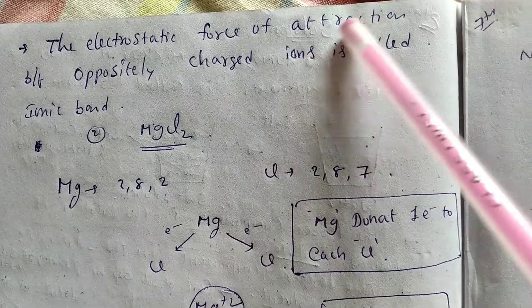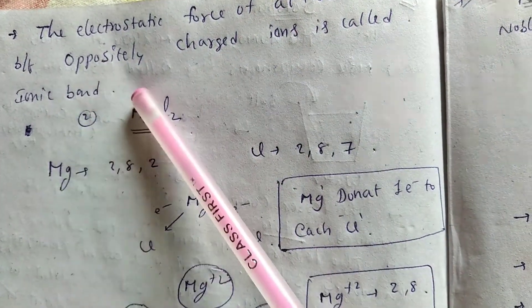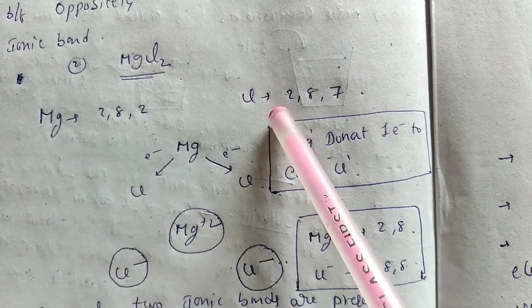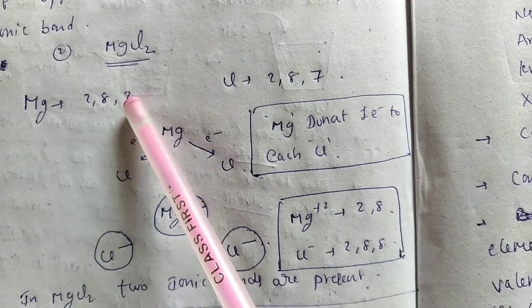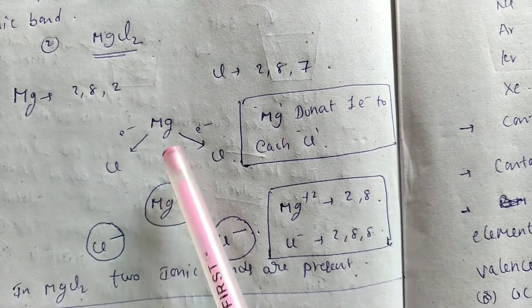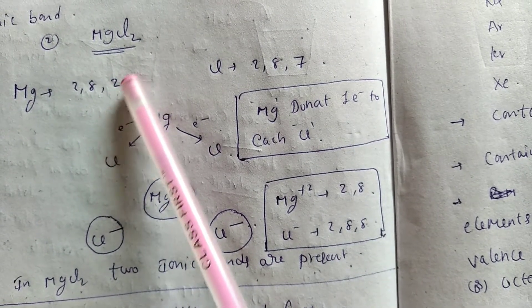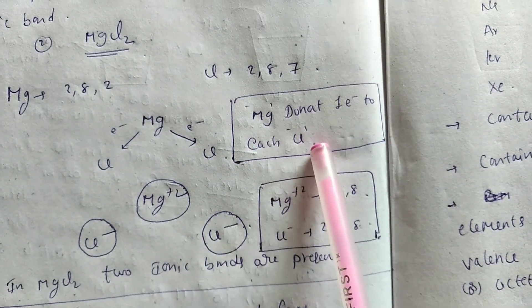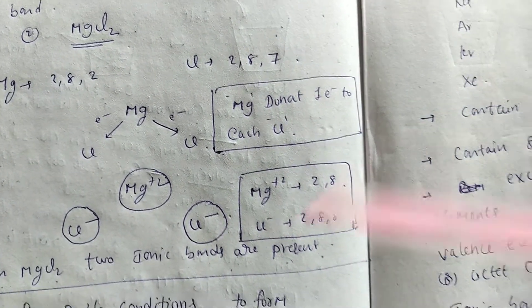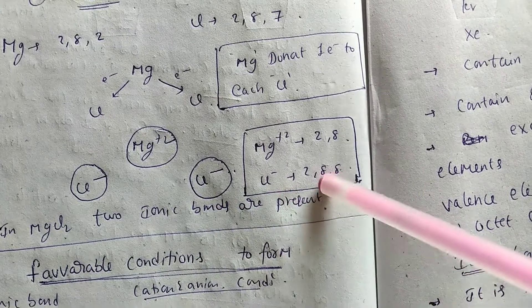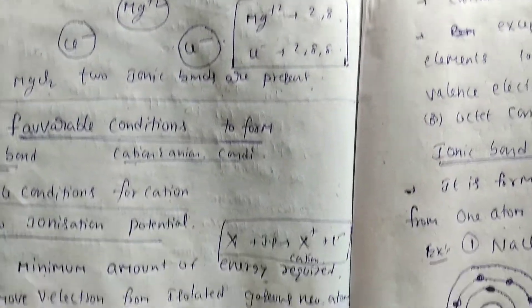So ionic bond is also defined as: the electrostatic force of attraction between oppositely charged ions is called an ionic bond. Next, MgCl2 formation — it is similar. Mg configuration: 2,8,2; chlorine configuration: 2,8,7. In MgCl2, two ionic bonds are present. Next, we look at favorable conditions to form an ionic bond.